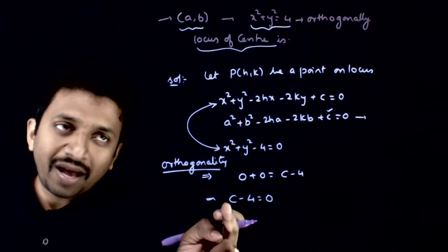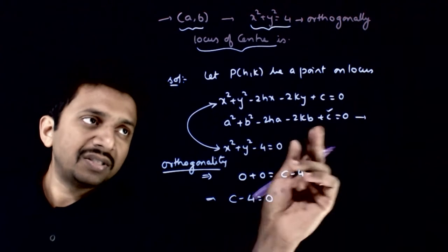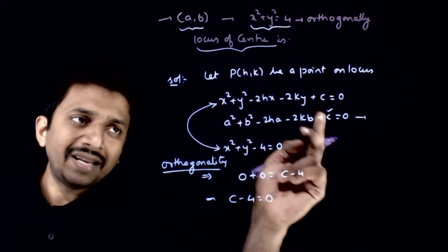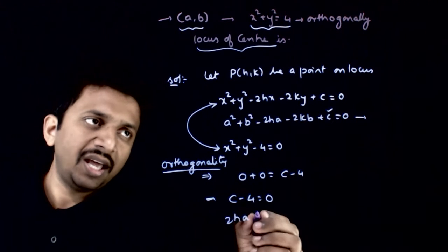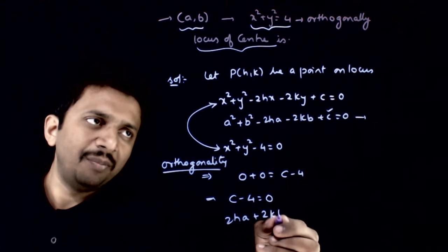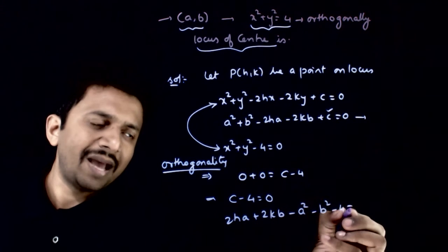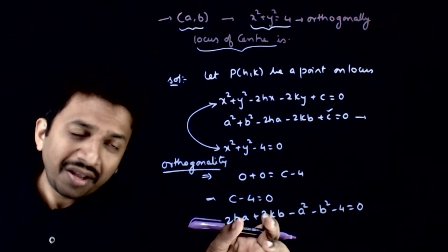Let us put the value of c that we obtained from the first condition into this orthogonality condition. So c = 2ah + 2kb - a² - b², substituting: 2ah + 2kb - a² - b² - 4 = 0. This is the condition on h and k.